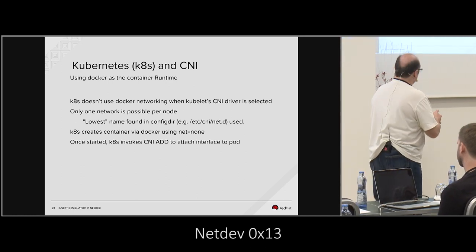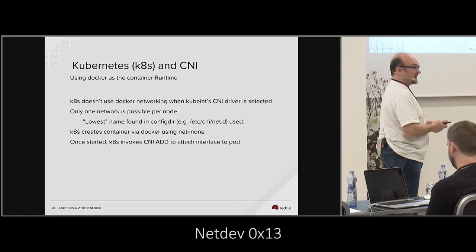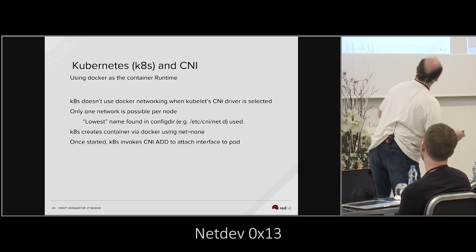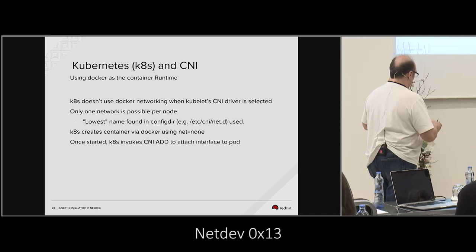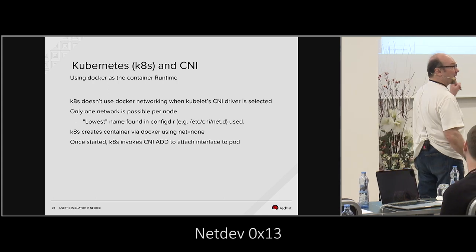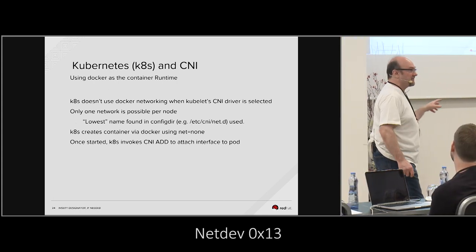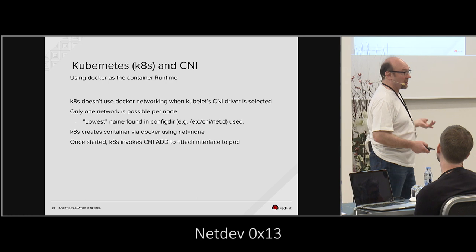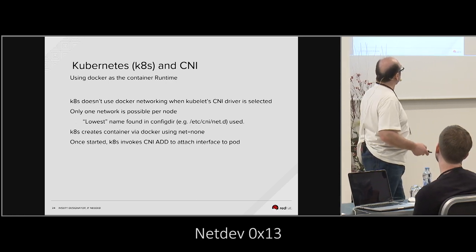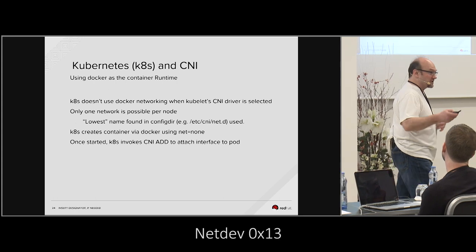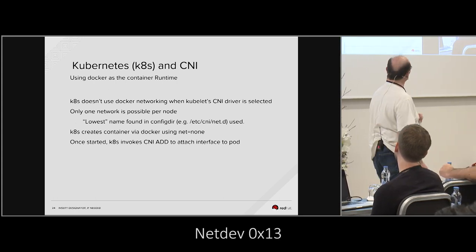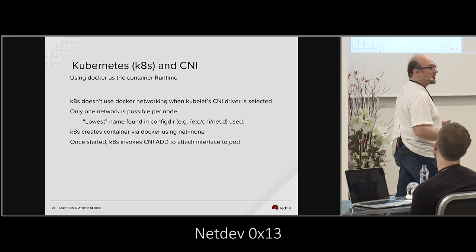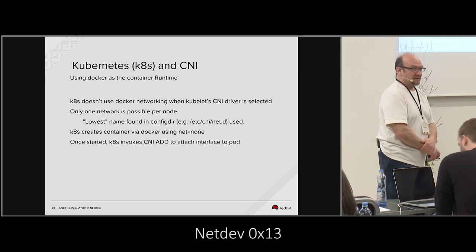But Kubernetes does just enough to get one NIC in a pod. Kubernetes tends to only have one CNI config defined, simply because it's only going to ever give you one NIC. You don't have the flexibility of specifying a bunch of networks. If you have more than one config in the CNI netd directory, it will just find the first one alphabetically — and that will be your eth0 inside your pod.